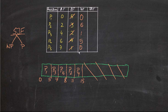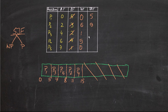So the waiting times are: P1=0, P2=6, P3=1, P4=5, P5=0. The average waiting time is (0 + 6 + 1 + 5 + 0) divided by 5. Now for the turnaround time — turnaround time is waiting time plus burst time. Turnaround time for P1 is 5, for P2 is 9, for P3 is 3, for P4 is 9, and for P5 is 1.